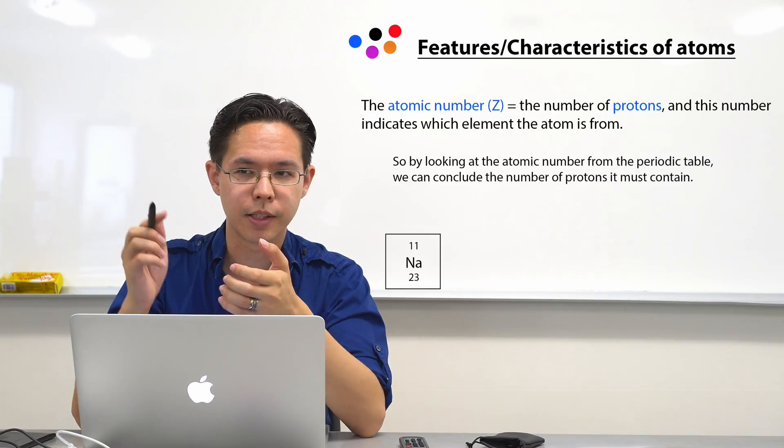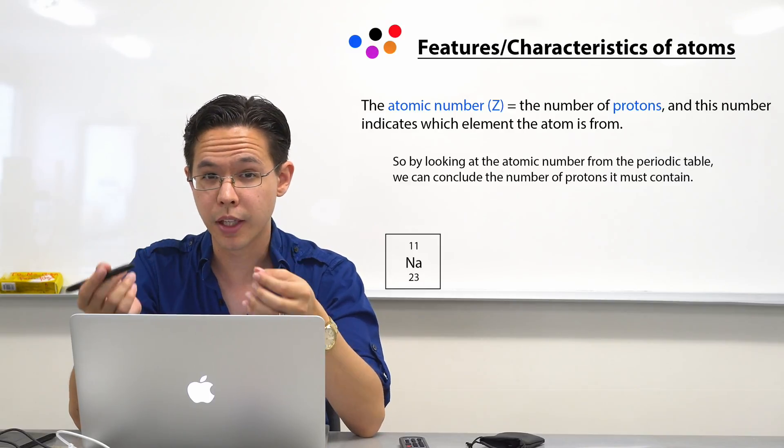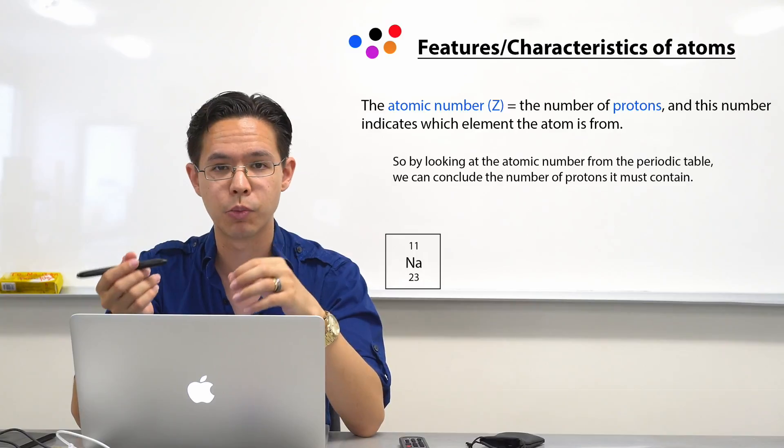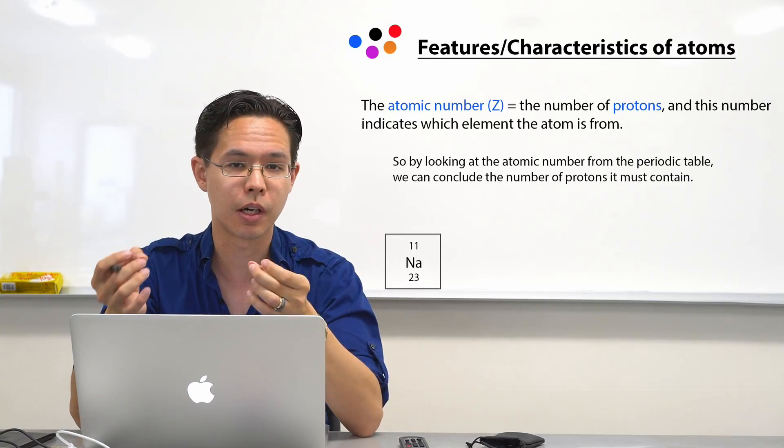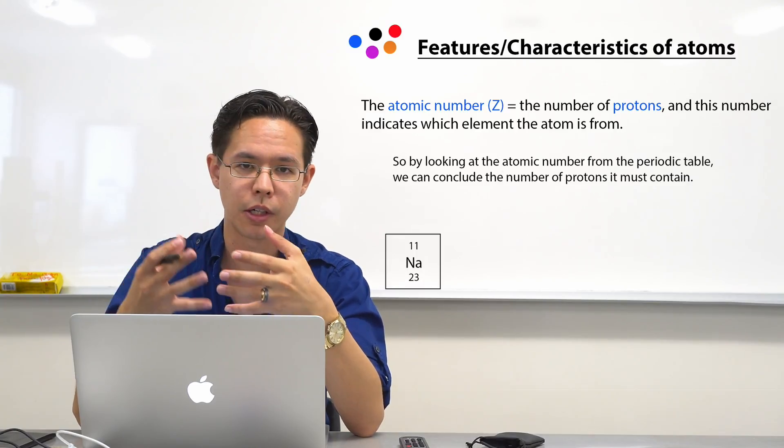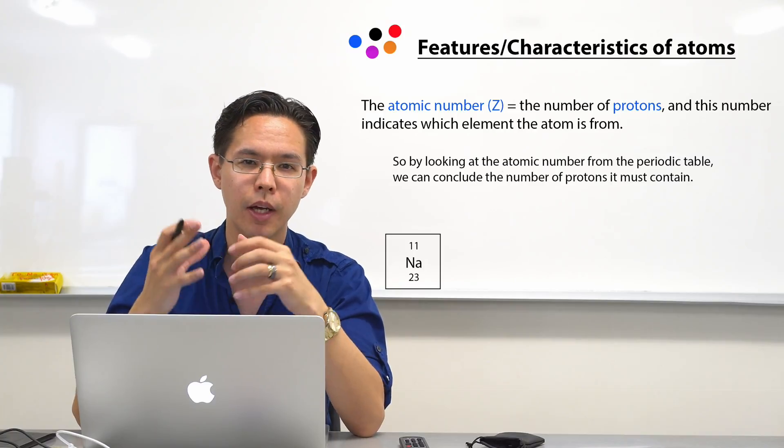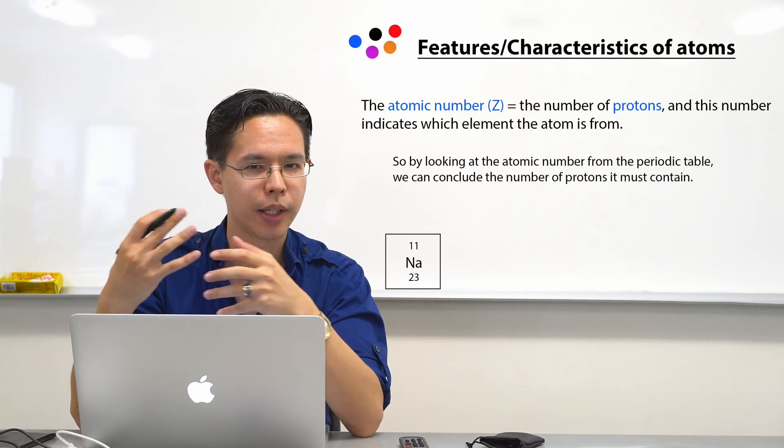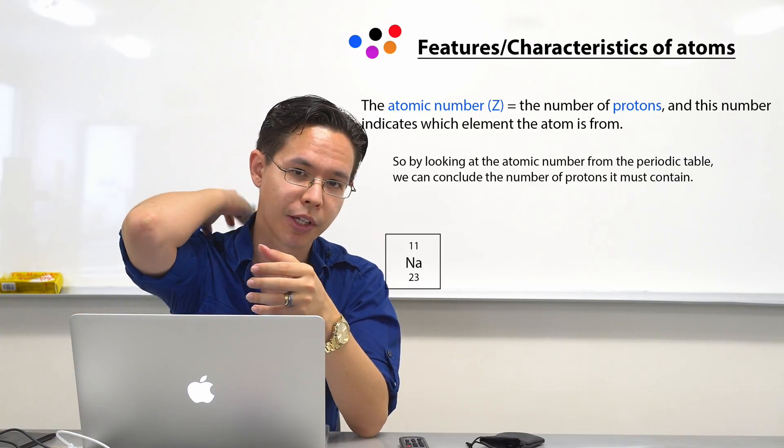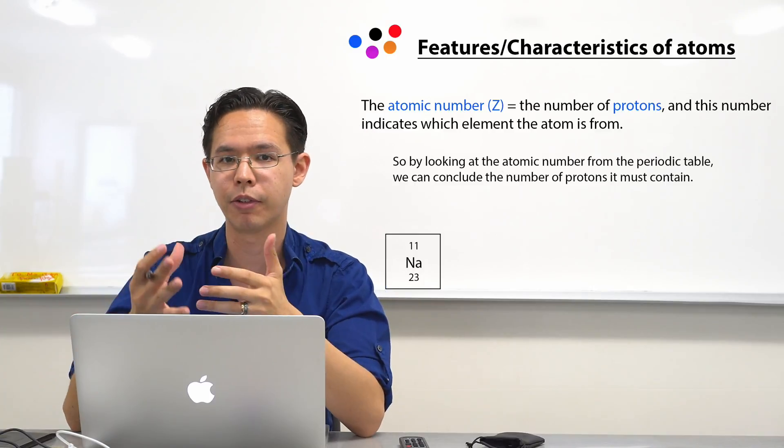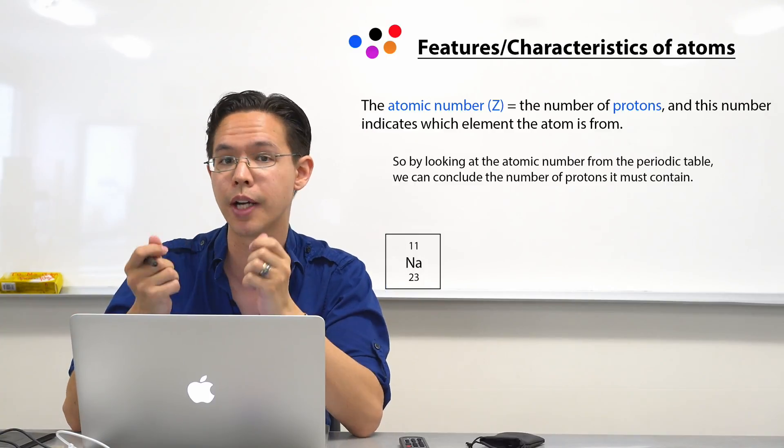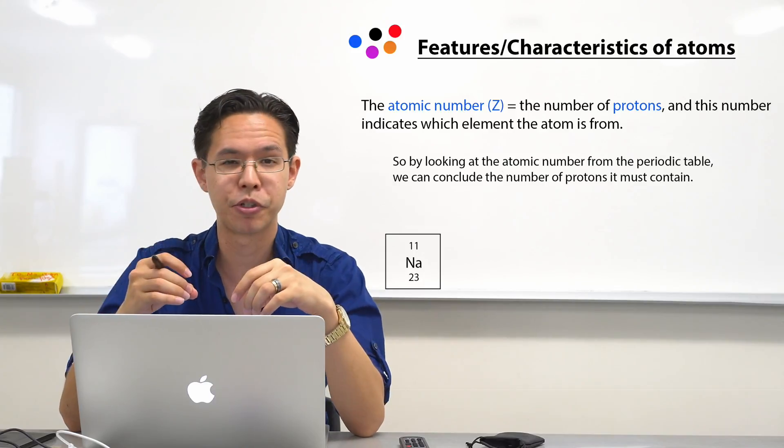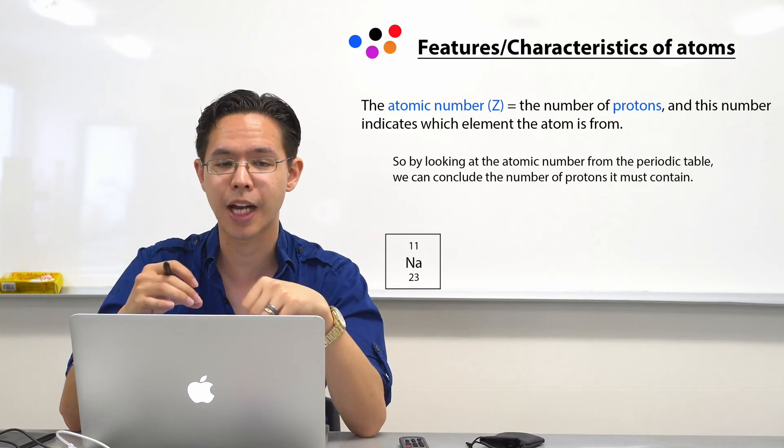The reason why it's given the symbol Z, we think that from history it was once referred to as Atomzahl in German, which Zahl meaning a figurative number. In a similar sense that when you play a game of sport, you might have a number on your jersey or uniform that identifies you from the other players. It's your identifying number. Same principle is happening here with atoms.